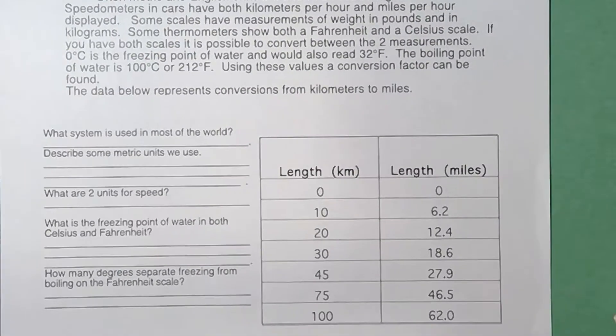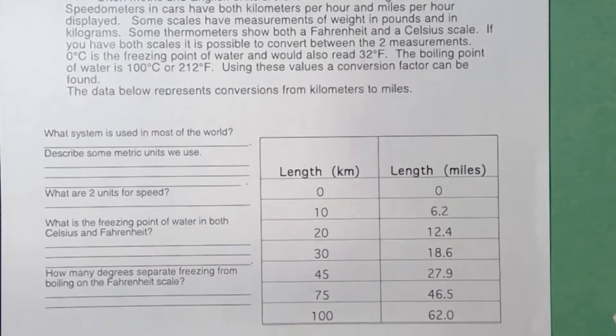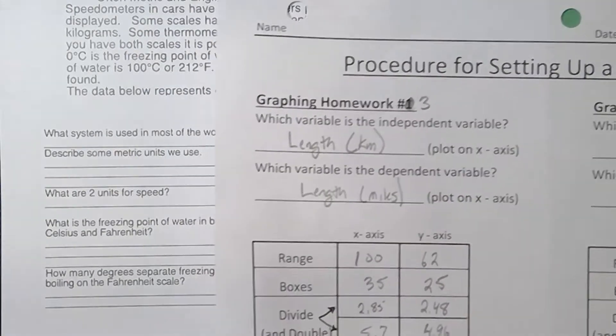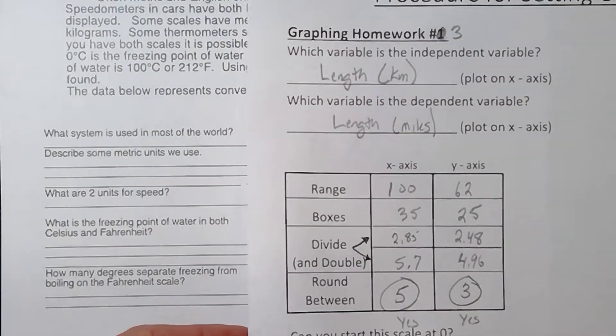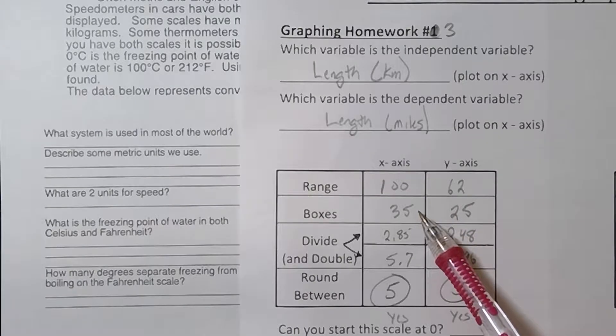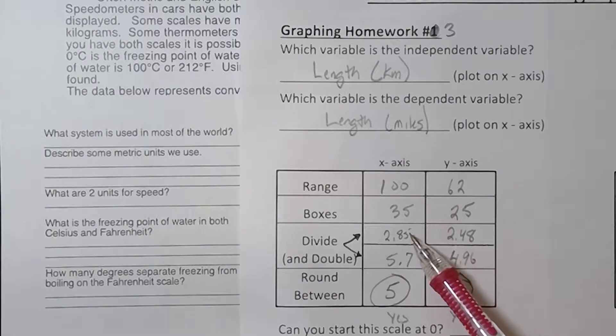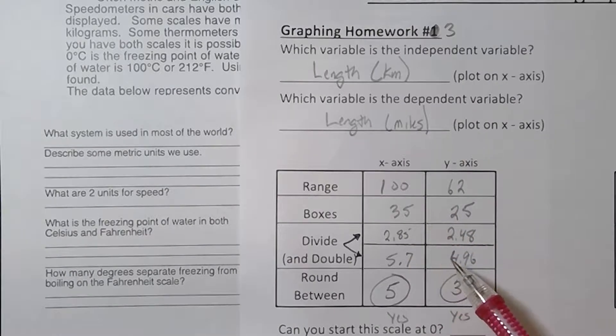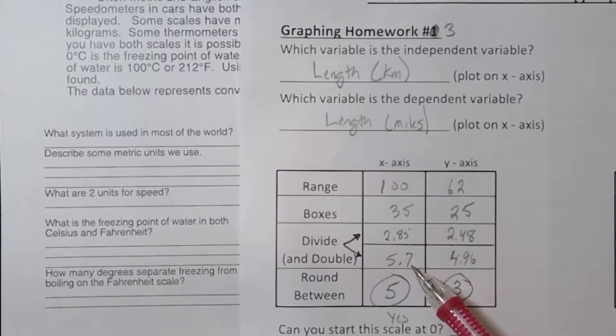Now the first variable is going to be our independent variable. So when we're trying to do this, the length in kilometers goes on the x-axis, the length in miles goes on the y-axis. You're taking a range of 100 and dividing it by 35. You divide and double. So between 2.8 and 5.7, clearly going by fives is a pretty easy interval.